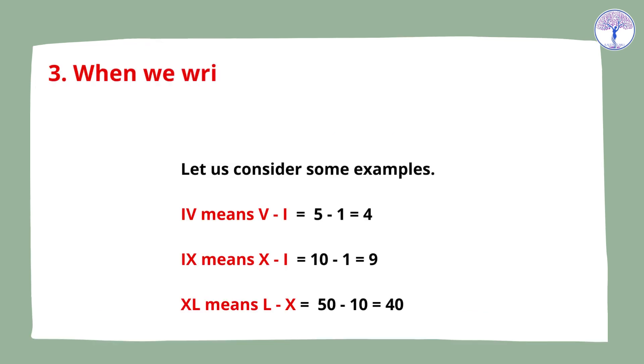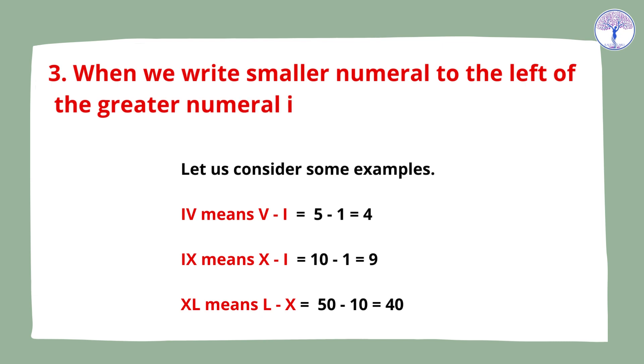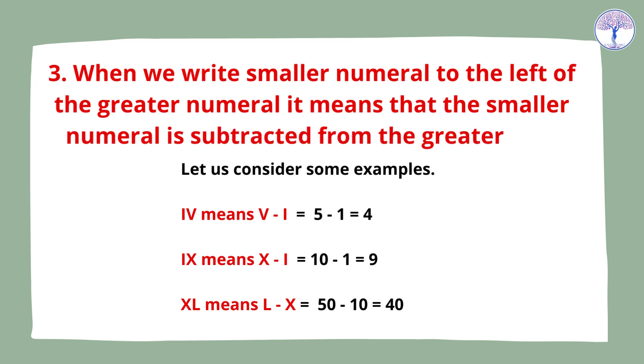Rule 3: When we write a smaller numeral to the left of the greater numeral, it means that the smaller numeral is subtracted from the greater one. Let us consider some examples: IV means V minus I equals 5 minus 1 equals 4. IX means X minus I equals 10 minus 1 equals 9. XL means L minus X equals 50 minus 10 equals 40.